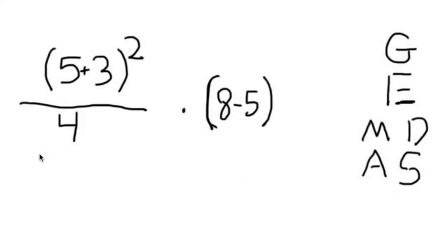Let's simplify the problem quantity 5 plus 3 squared divided by 4 times quantity 8 minus 5 using the order of operation.